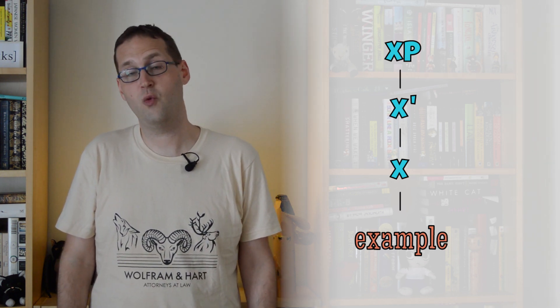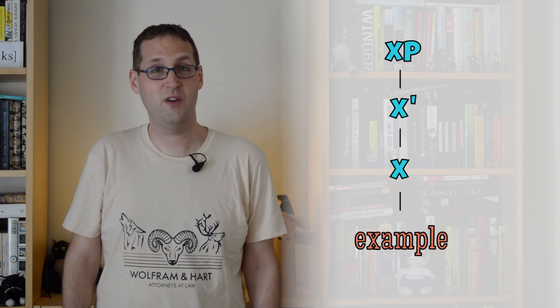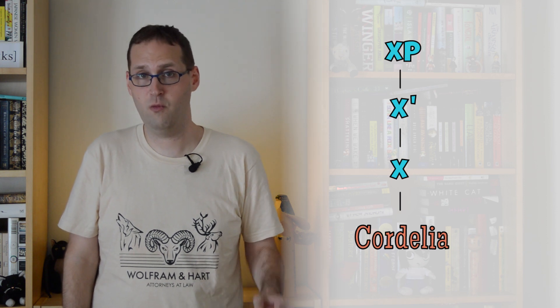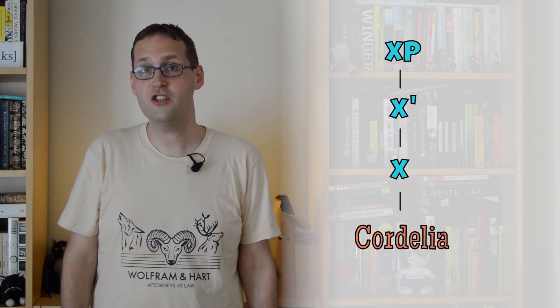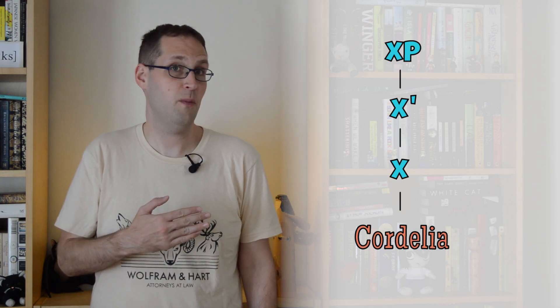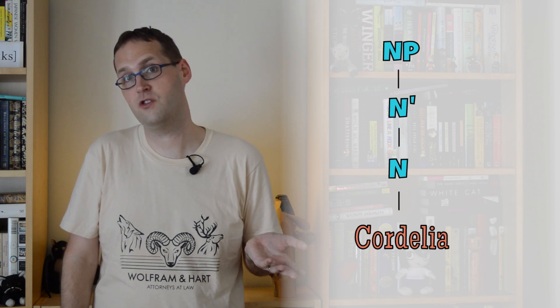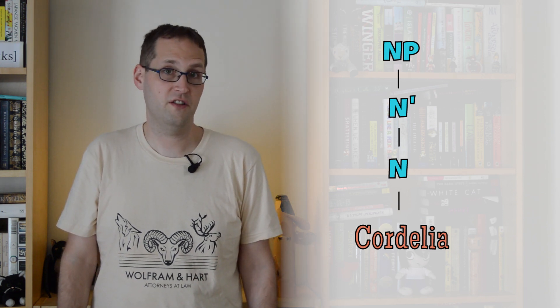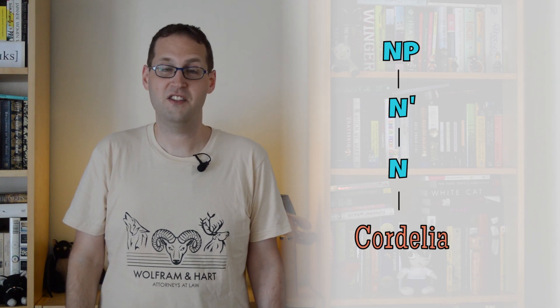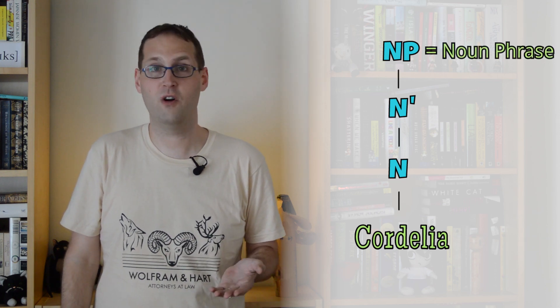This gets a lot clearer when you start looking at some examples. Let's start with something really simple — a name, like Cordelia. In your mental lexicon, where you store all your words, each term belongs to a syntactic category, which is like a part of speech: a noun, an adverb, etc. Cordelia is a noun, so when we want to put Cordelia in our x-bar tree, we replace the x's with n's for nouns. In this phrase, Cordelia is the head, which is the part of the phrase with the most content and meaning. Because Cordelia is the head and it's a noun, the whole thing becomes a noun phrase, or NP.